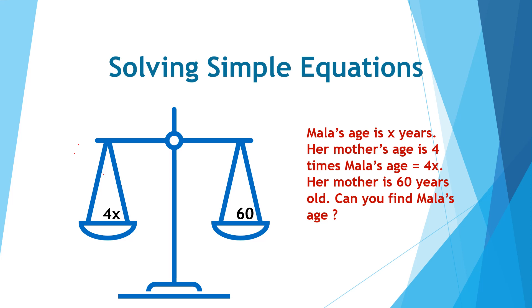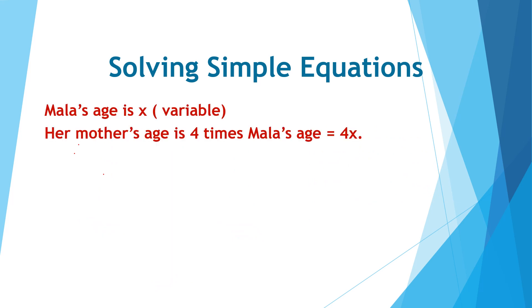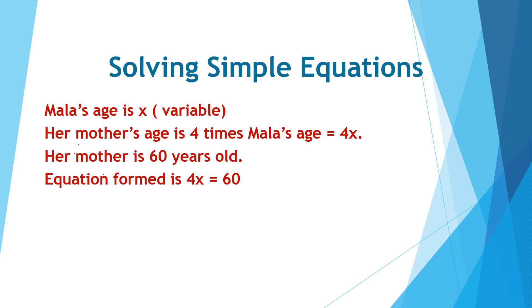Let's take the third example. Mala's age is x years — that is, we do not know how old Mala is. Her mother's age is 4 times Mala's age, so mother's age is 4x. We are also given that her mother is 60 years old. We equate mother's age in terms of Mala's age: 4x is on the left hand side and 60 is on the right hand side. The equation formed is 4x is equal to 60.